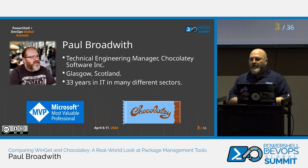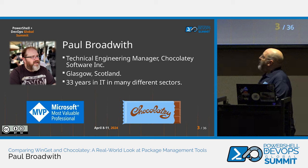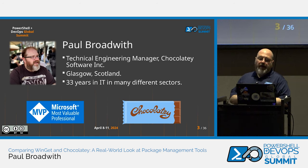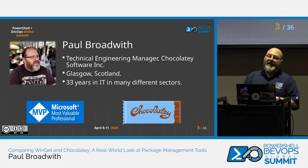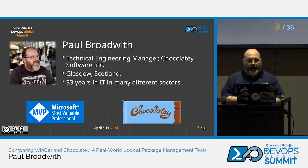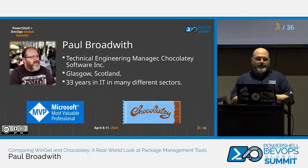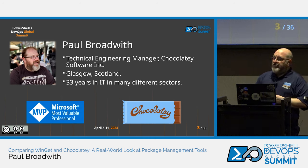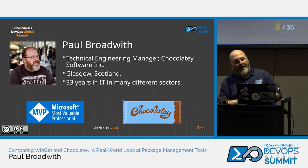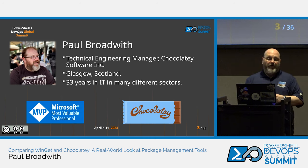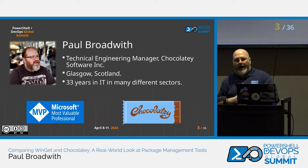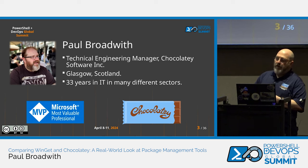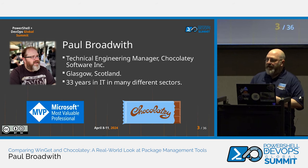My name is Paul Broadbeth. I'm a Technical Engineering Manager at Chocolatey Software. Me and my team are responsible for Chocolatey CLI, which we're going to be looking at today, and other Chocolatey products. I'm from Glasgow in Scotland — a long way away — and I've got 33 years in IT across many different sectors, about half of that as a contractor. I'm also a Microsoft MVP, primarily for my work in PowerShell.